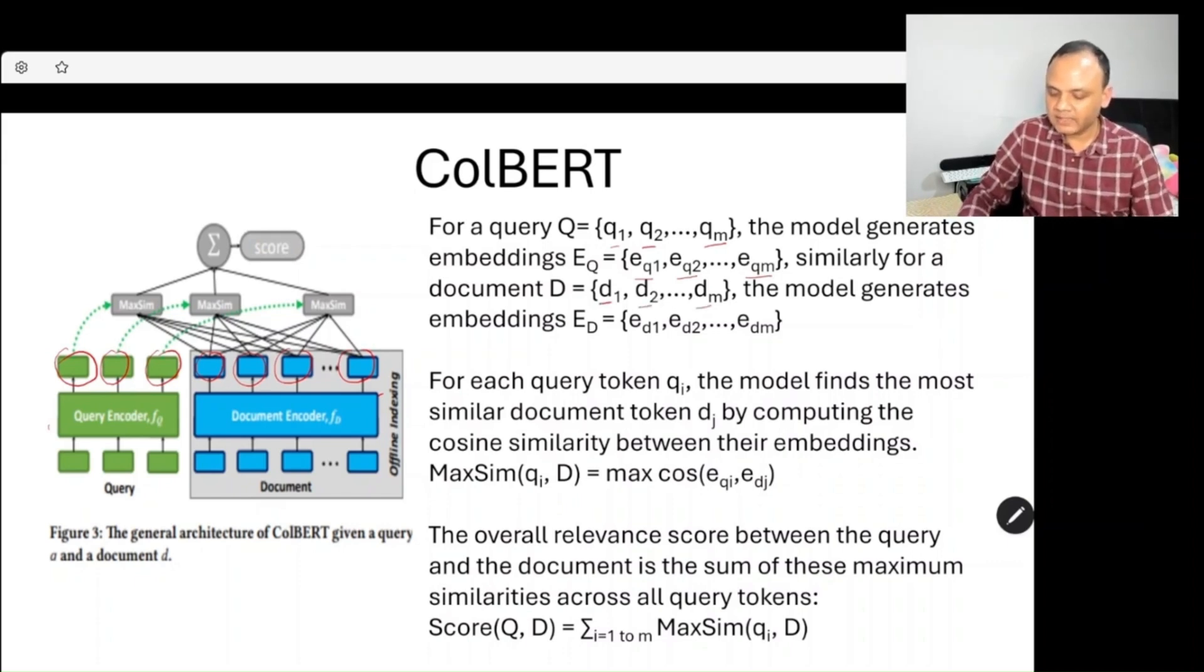Similarly, for a document D, we break it into d1, d2, dm, and the model generates corresponding embeddings: ed1, ed2, and edm.